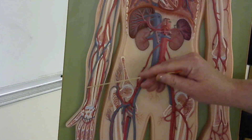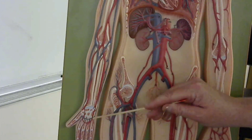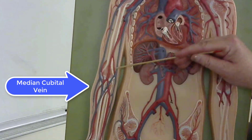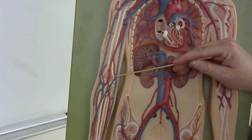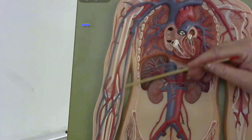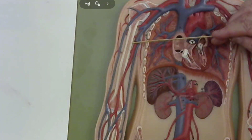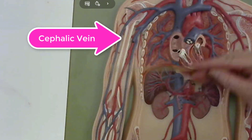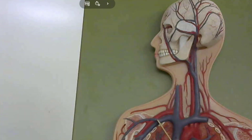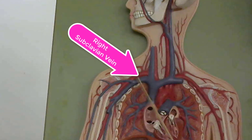We also have a radial vein on the thumb side and an ulnar vein on the pinky side. Then we have the median cubital vein. This is the brachial vein, and the brachial vein is going to turn into the axillary vein. On the distal portion, this is the cephalic vein. The axillary vein and cephalic vein are going to merge together, and at the point where they merge, this is now going to be the subclavian vein.